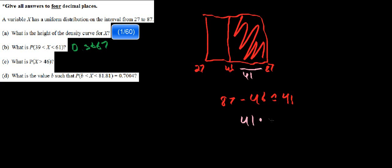And now, the next step is going to be 41 multiply 1 over 60 to get the area, the proportion in here, which gives us an answer of 0.6833. So that's going to be our answer right over here. 0.6833.